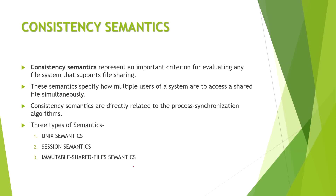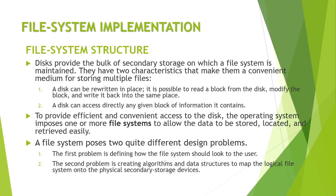Now there are some consistency semantics — a certain set of rules governing how systems can access files. There are three types: Unix semantics, session semantics, and immutable shared files semantics. Unix semantics relate to the system level, session semantics relate to state information, and immutable shared files semantics concern the sharing of files. In the next video we will discuss file system implementation, starting with file system structure.